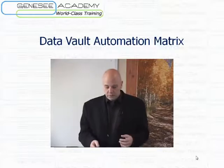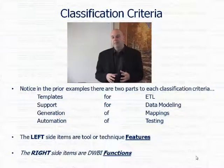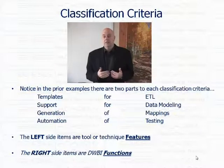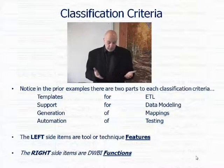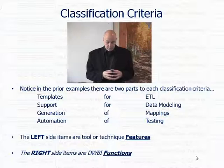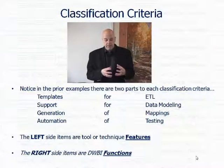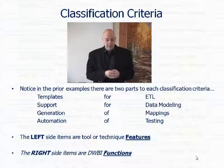How can I not just define it, but find the people that do what I need done, or find the tools or approaches or templates that I can use for my situation? From there, you can look at the broader matrix approach. On the left side of our matrix, we deal with things like tools, techniques, and features. On the right side, we map it against functions.